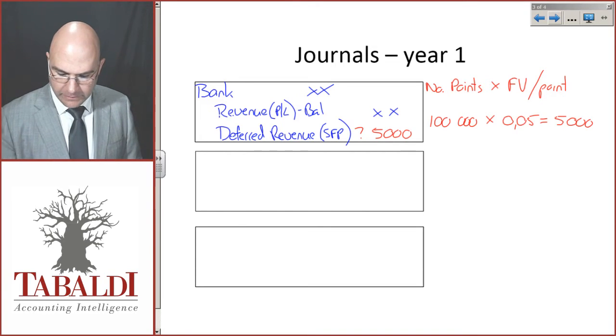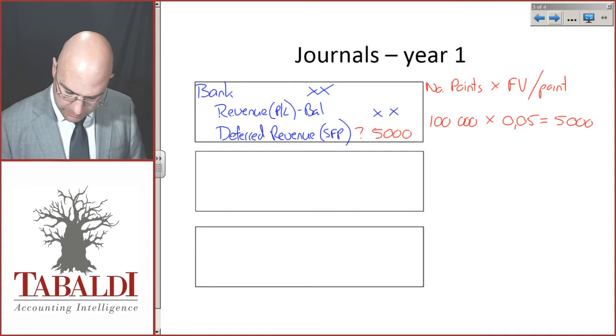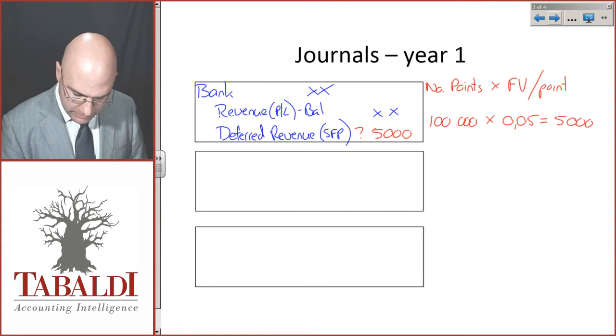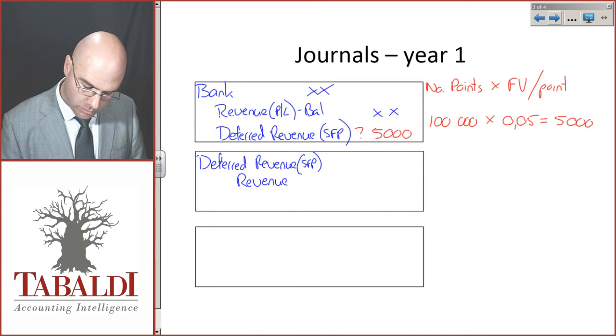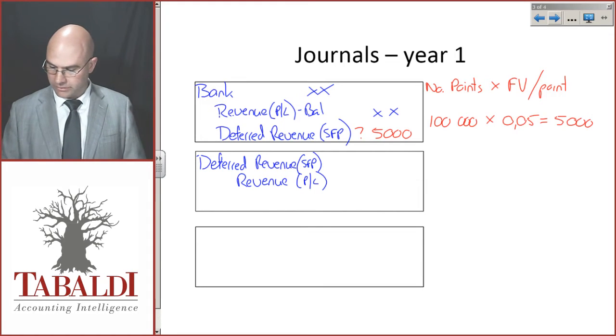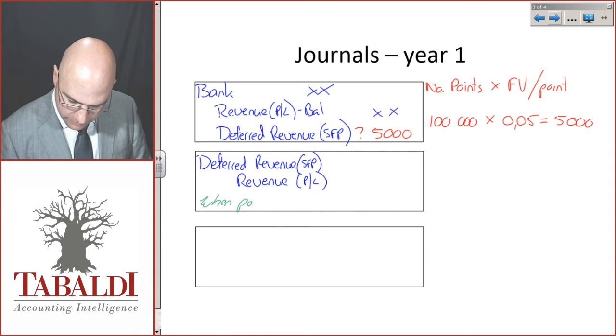Now, at the end of the year, you're going to start redeeming some of these. When the points are redeemed, you're going to debit deferred revenue and credit revenue in profit or loss. So that's when the points are redeemed.